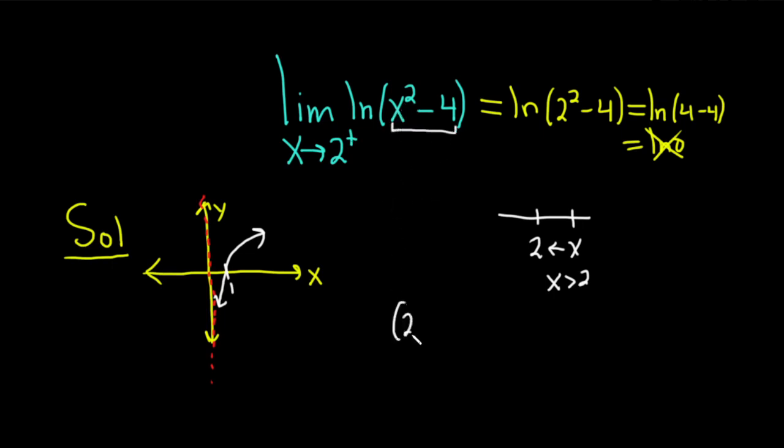If you have 2.1 squared minus 4, that's pretty small. But if you have 2.001 squared minus 4, that's even smaller, because you're getting closer and closer to 2.